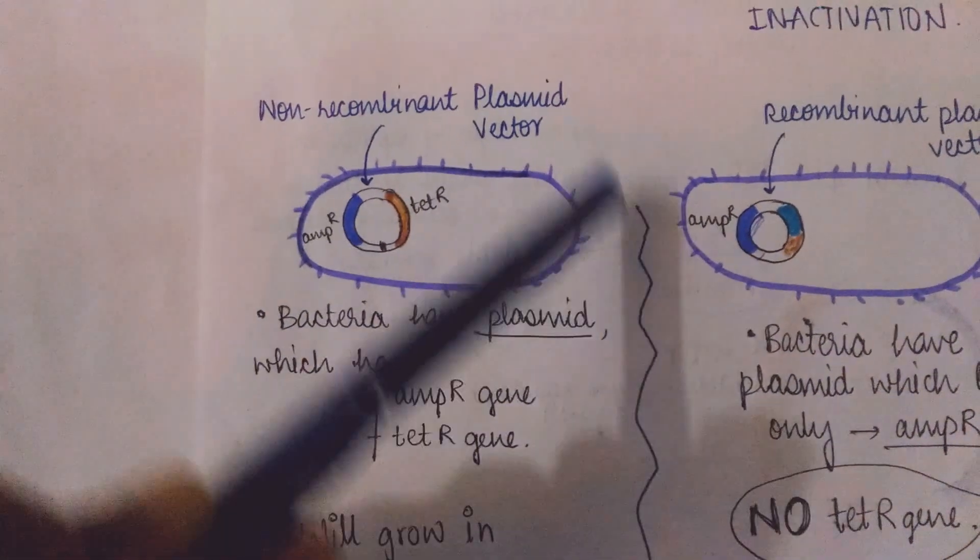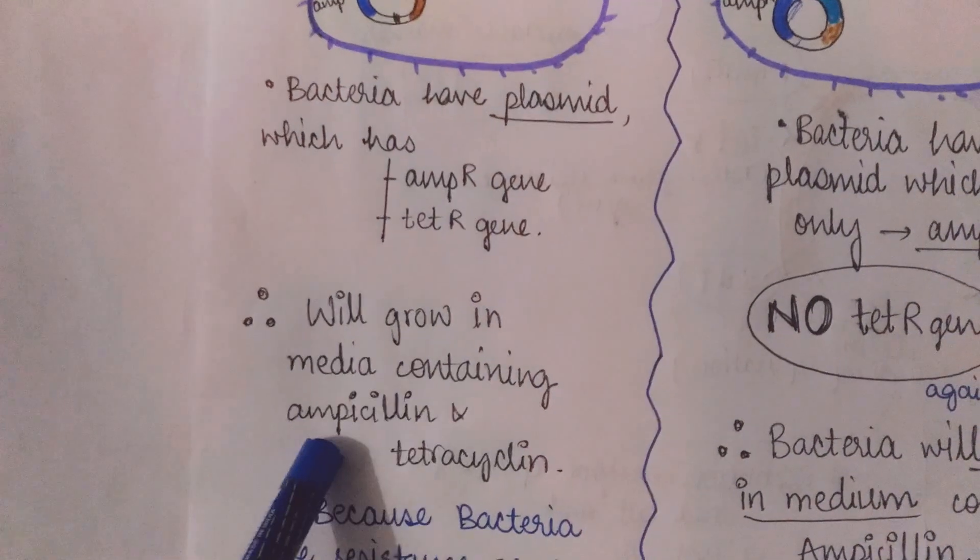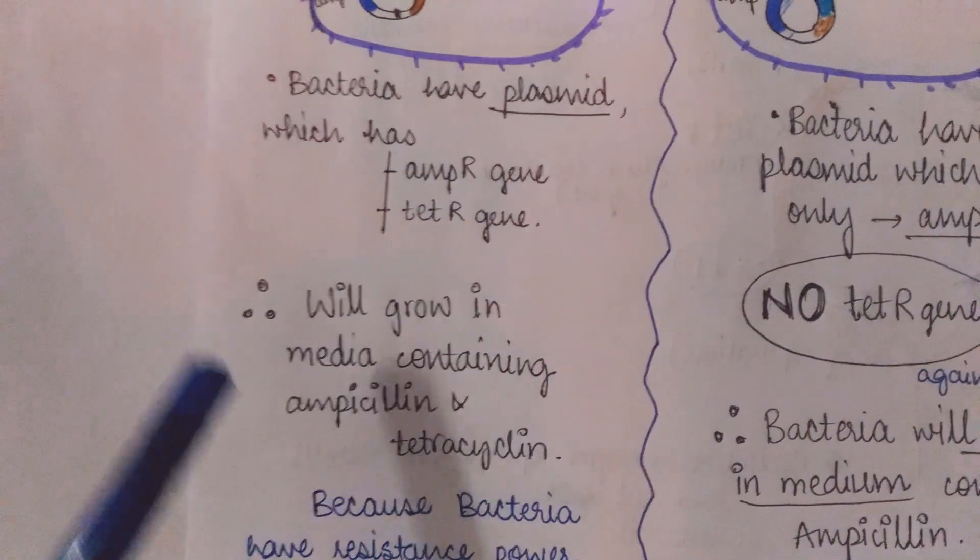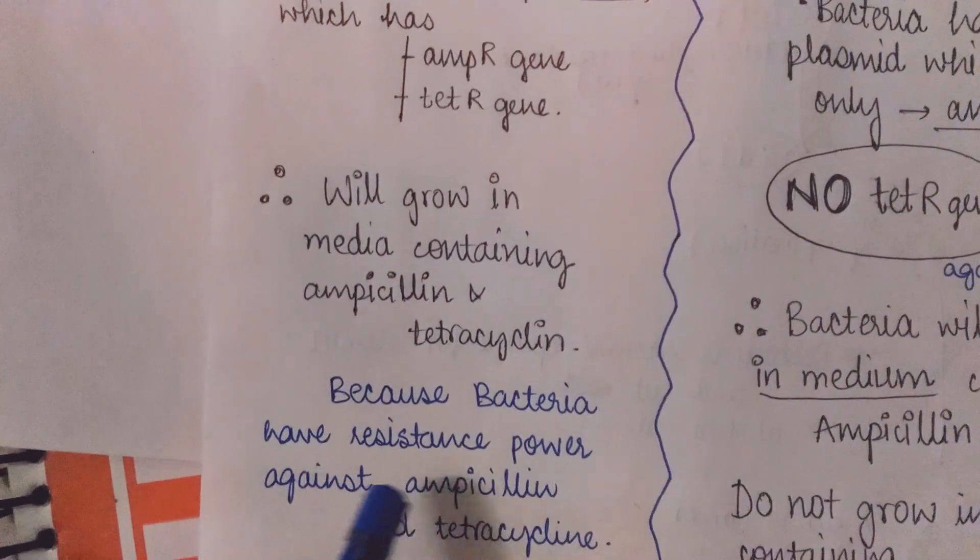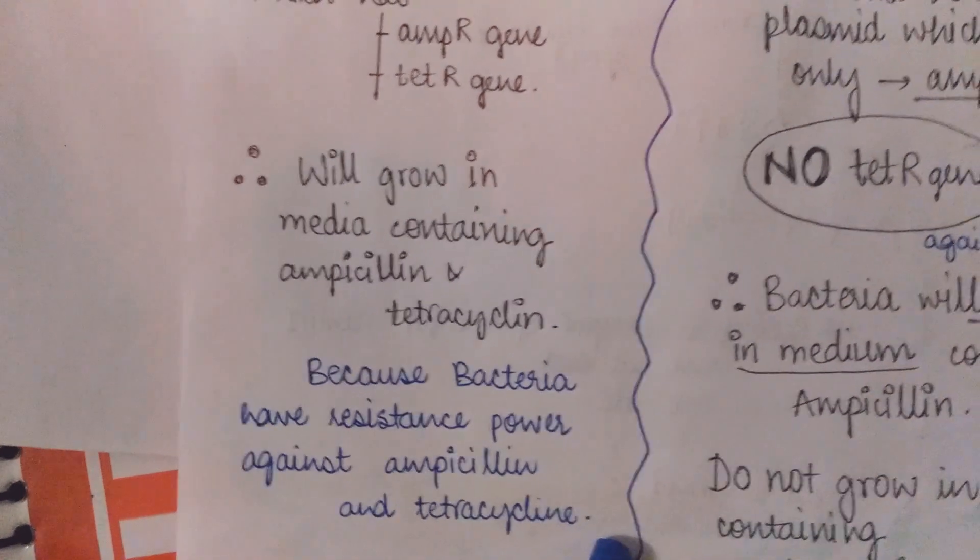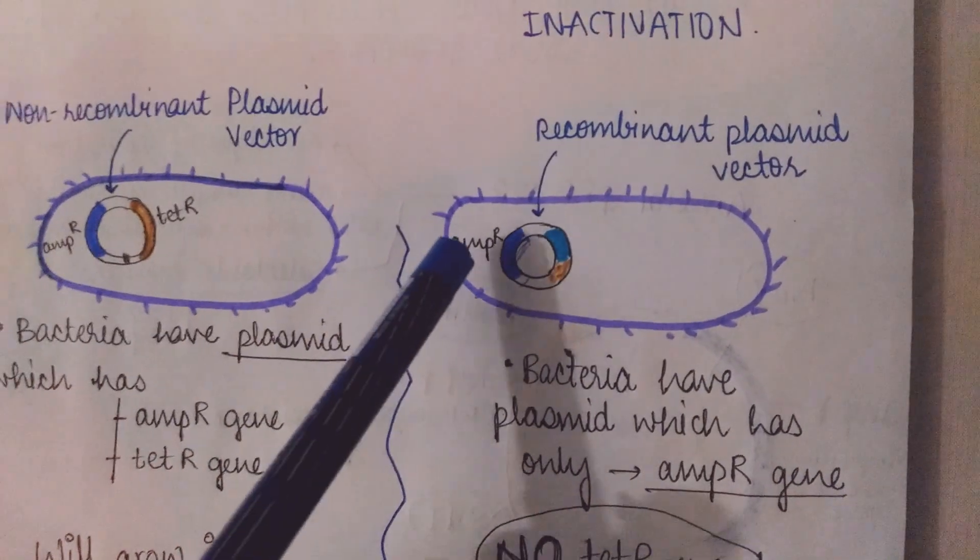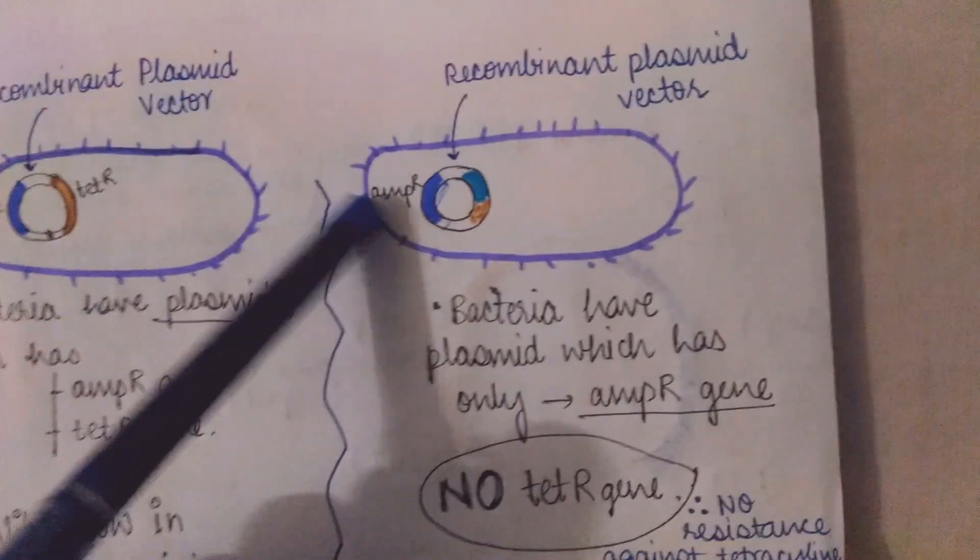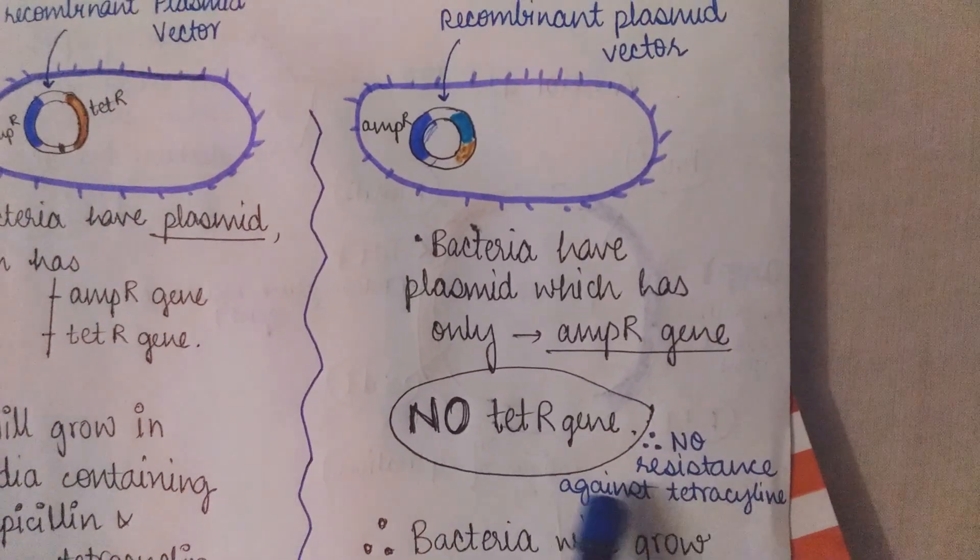Now when we grow these bacteria in a medium containing the ampicillin and tetracycline they will grow, because the bacteria have resistant power against the ampicillin and tetracycline. But here it has only ampicillin resistant gene. No tetracycline gene. So no resistance against the tetracycline.